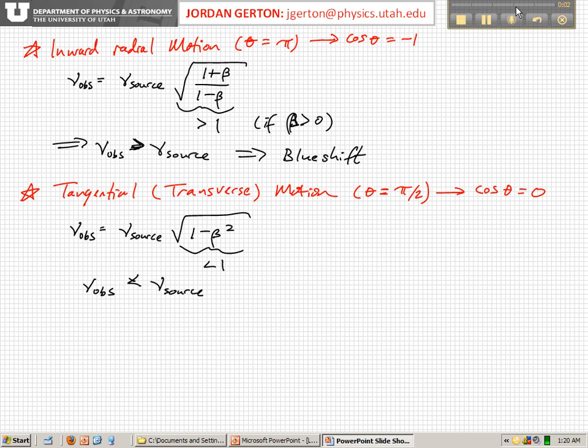Okay, again, so when the star, the source is moving tangentially or transversely to the line that separates the source and the observer, then theta equals pi over 2, cosine theta equals 0, and you get this expression.